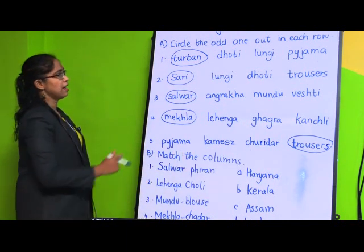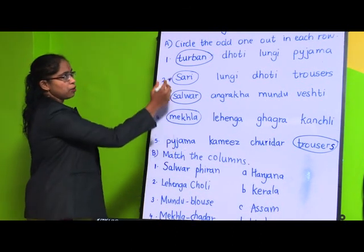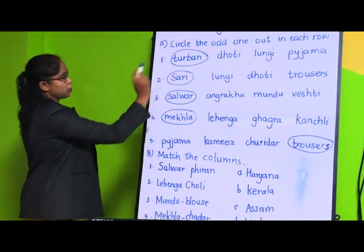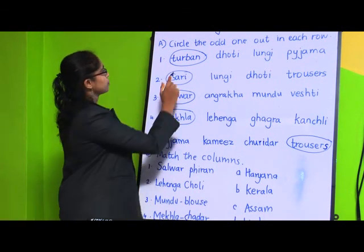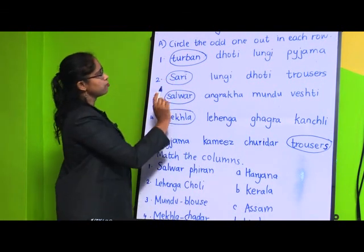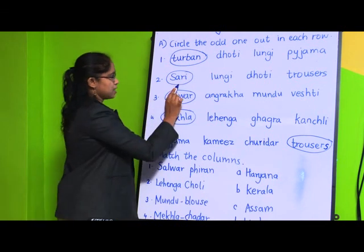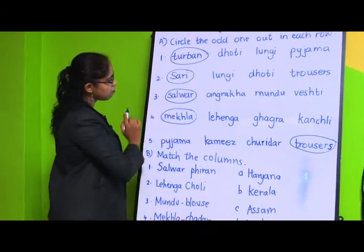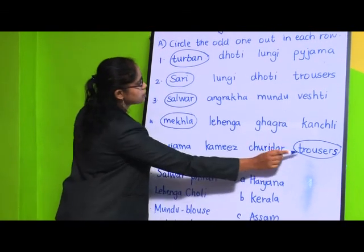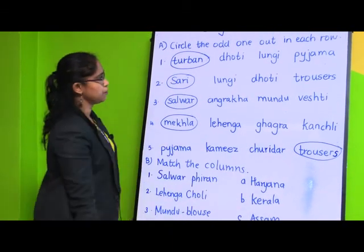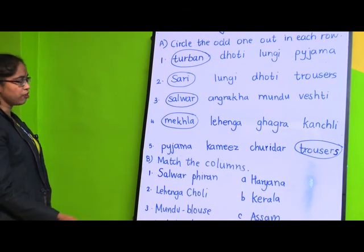Everyone has solved this question. Remember, you are going to solve with pencil, not pen. First answer is turban, second is sari, third is salwar, fourth is mekhla, and fifth is trouser.